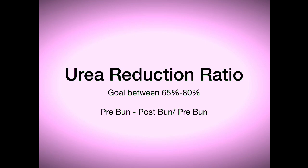So at a particular time, we removed 65% of the urea, which is a major poison that we produce daily, out of the patient's blood in order for them to live and function and be healthy. So when we look at those two numbers — the KT over V and the URR — that lets us know, is the patient getting good dialysis?